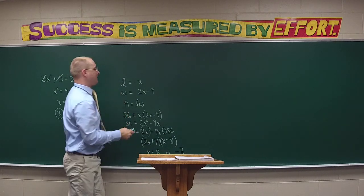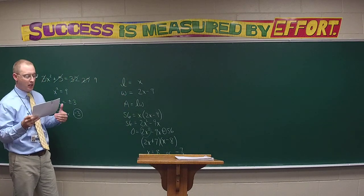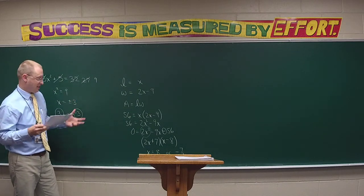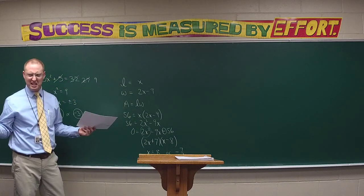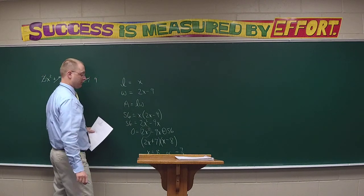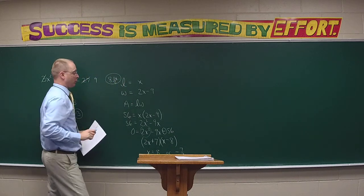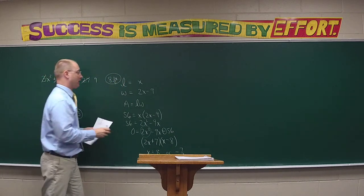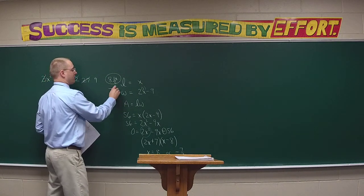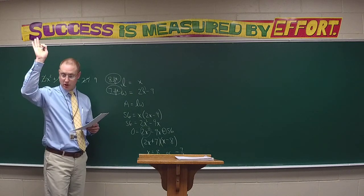X is either 8 or negative 7 halves. But remember what x represents - the length of our vegetable garden in feet. Negative 7 halves feet? No. So x is 8. Eight feet is the length.